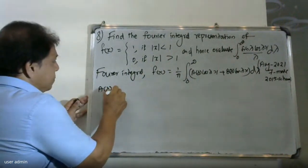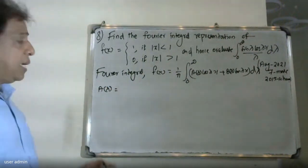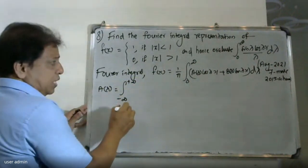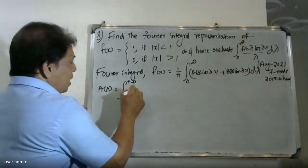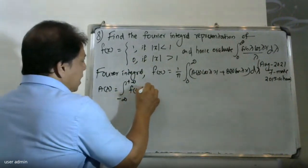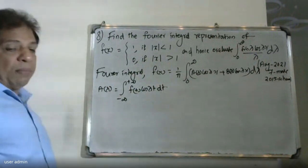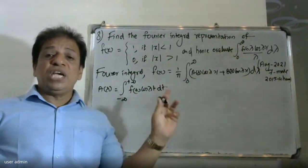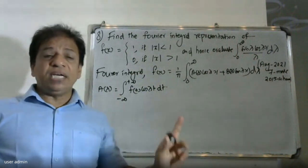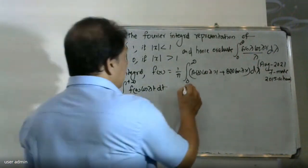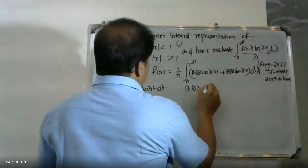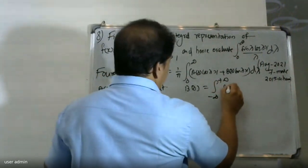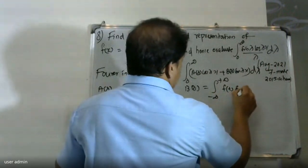The formula for A(lambda) is: A(lambda) equals integral from minus infinity to plus infinity of f(t) cos(lambda t) dt. And B(lambda) equals integral from minus infinity to plus infinity of f(t) sin(lambda t) dt.